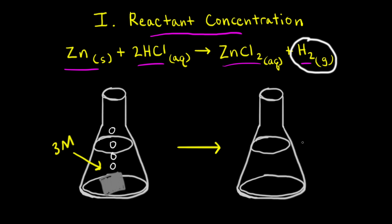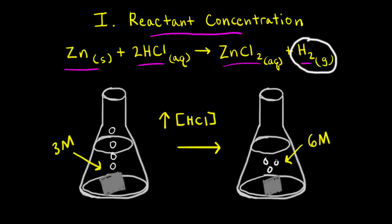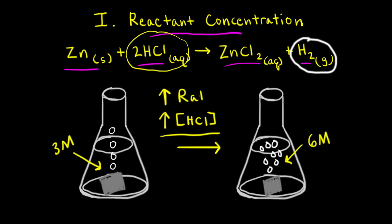Let's say that we repeat the experiment. This time, instead of using 3 molar hydrochloric acid, we're going to use 6 molar hydrochloric acid — we've increased the concentration of our hydrochloric acid solution. When we add our piece of solid zinc to our 6 molar hydrochloric acid solution, we would observe more hydrogen gas bubbles coming out of our flask. So we have increased the concentration of one of our reactants, hydrochloric acid, and we've observed an increase in the rate of the reaction.